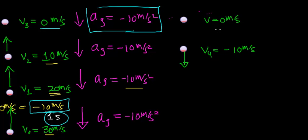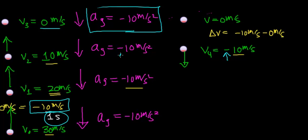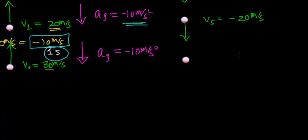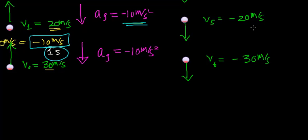The negative sign indicates the object is now moving downward. The change in velocity is negative 10 minus 0, which equals negative 10 meters per second. Notice that both the velocity vector and the acceleration vector now point downward, so the object speeds up. After one more second — five seconds total — the velocity goes from negative 10 to negative 20 meters per second. After six seconds, it goes from negative 20 to negative 30 meters per second, increasing by 10 meters per second each second.